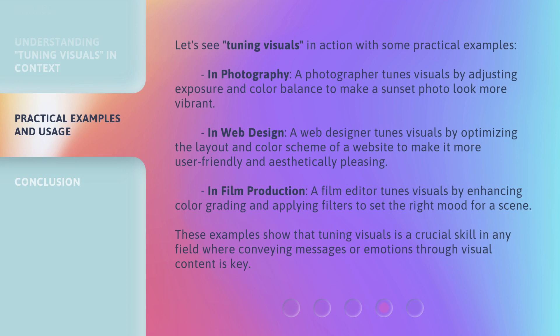Let's see tuning visuals in action with some practical examples. In photography, a photographer tunes visuals by adjusting exposure and color balance to make a sunset photo look more vibrant. In web design, a web designer tunes visuals by optimizing the layout and color scheme of a website to make it more user-friendly and aesthetically pleasing. In film production, a film editor tunes visuals by enhancing color grading and applying filters to set the right mood for a scene. These examples show that tuning visuals is a crucial skill in any field where conveying messages or emotions through visual content is key.